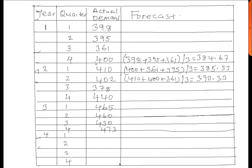For quarter 3 of year 2, we do the same with the last 3 data — that is from 402, 410, up to 400. We add these up and divide by 3: 402 plus 410 plus 400, divided by 3, and we get 404.